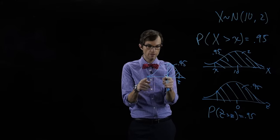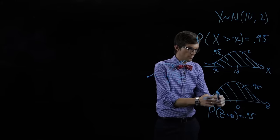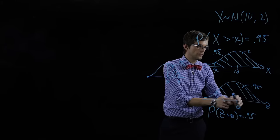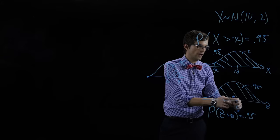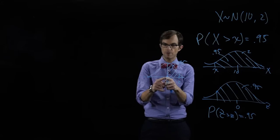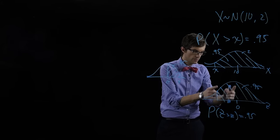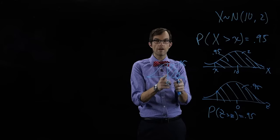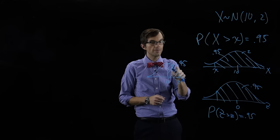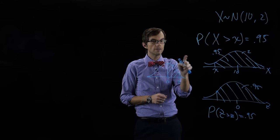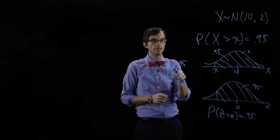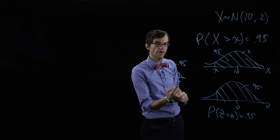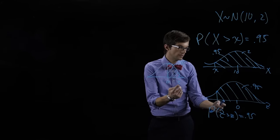This area down here is 0.95, and the left half of the distribution is 0.50. So the area between zero and our z value is 0.45. If we look up this area in the z table, we can find the associated value of z.